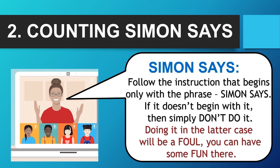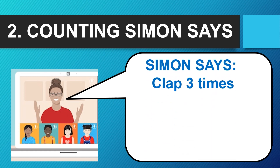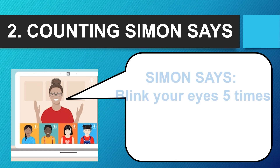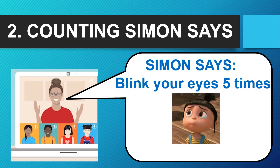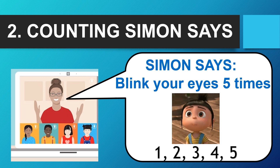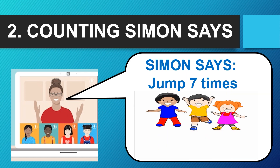Doing it in the latter case will be a foul, and you can have some fun there. For example, 'Simon says clap three times' — students count along: one, two, three. 'Simon says blink your eyes five times' — as students blink, they count along: one, two, three, four, five.